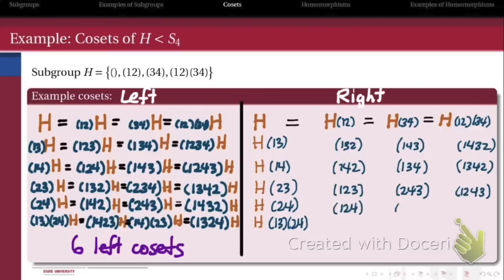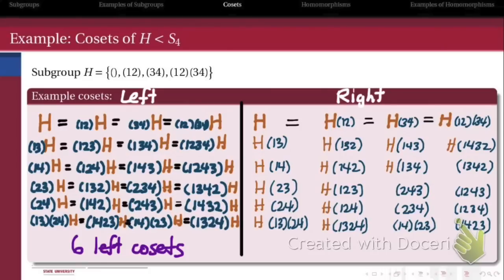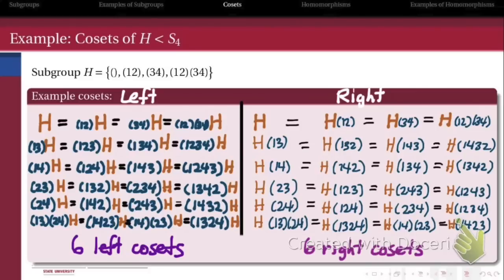And again, because each right coset is going to have 4 elements in it, and operating by one of those elements is going to give me the same right coset as operating by any other one of those elements, we again get a total of 6 right cosets arranged into groups of 4. So there are 6 right cosets. So it turns out that we have the same number of left cosets as we have right cosets for this subgroup H.